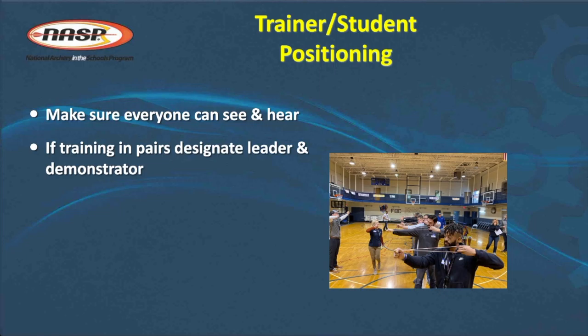Once a step is completed by everybody in the class, she'll go on to the next part. It's important that the model stays put — they are a visual aid, a living poster. If a candidate on the shooting line is having difficulty and the model leaves their position to go help, the class doesn't have anyone to look at. They've lost their visual aid. So one person is a model and stays put while the other walks up and down making sure all candidates are getting each step correctly.